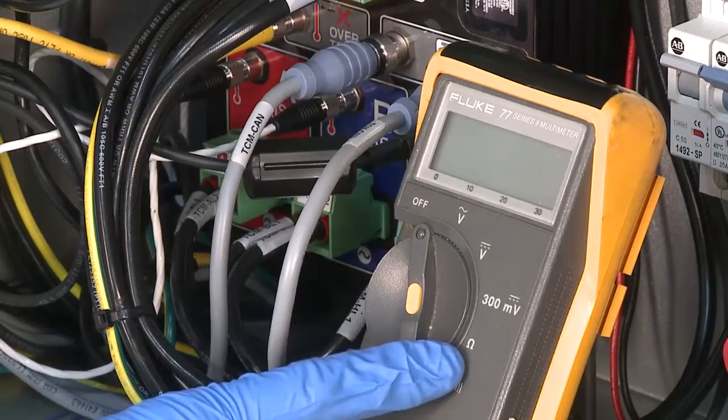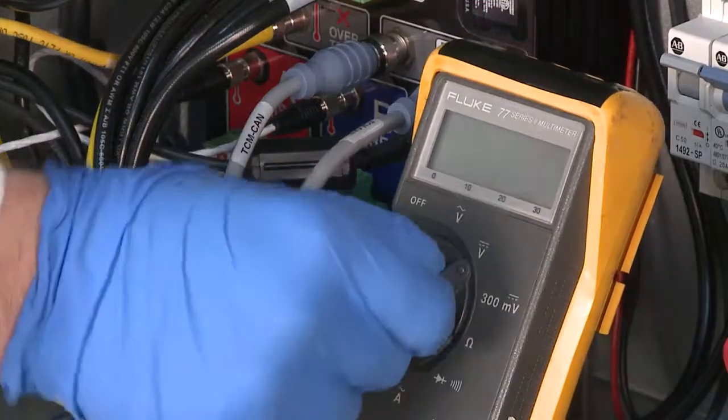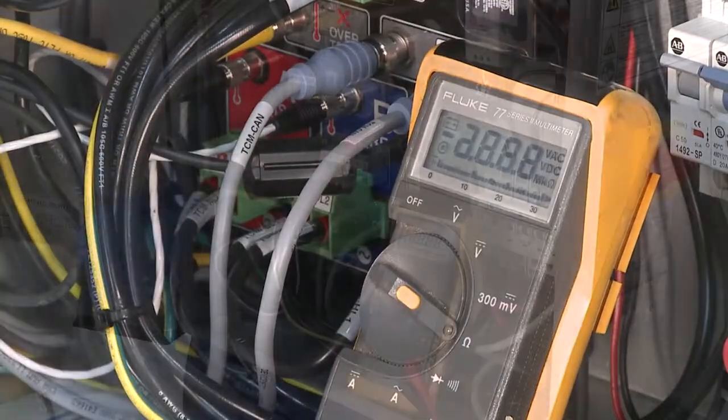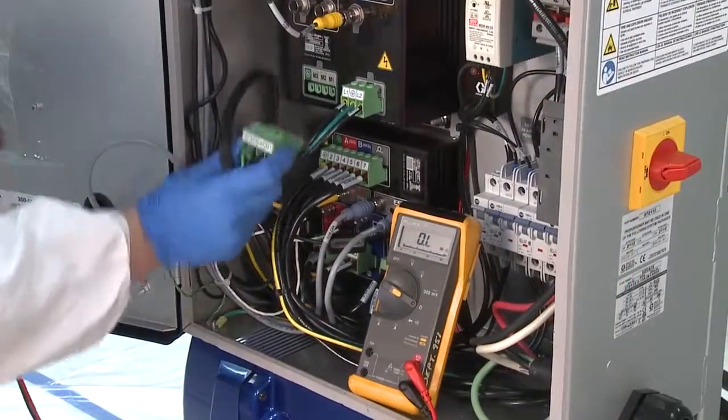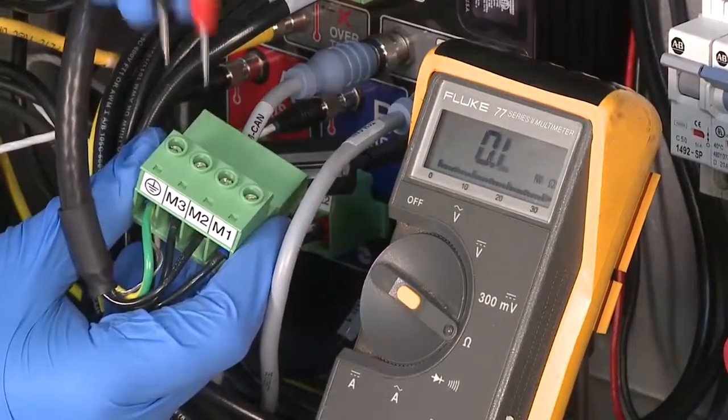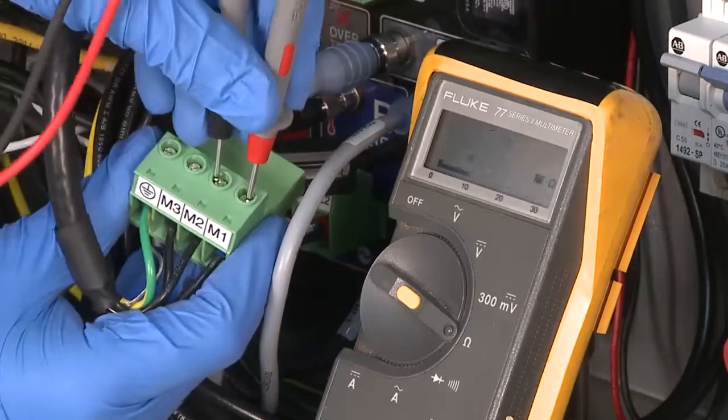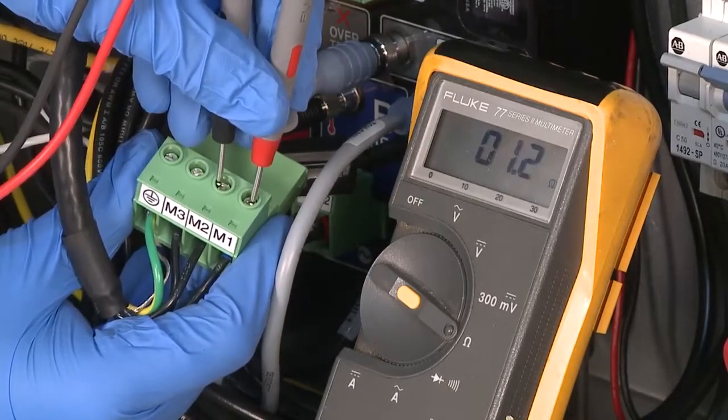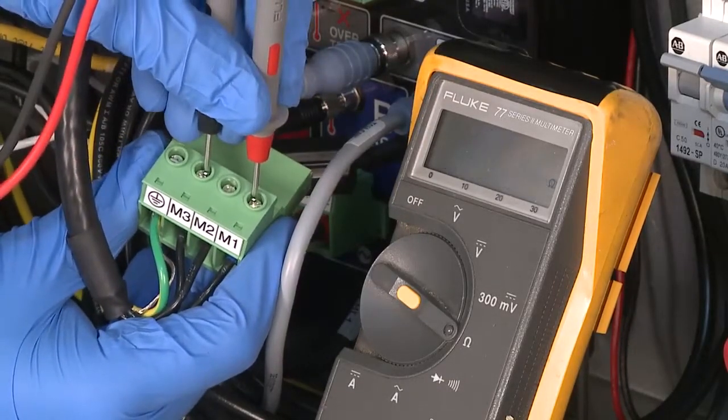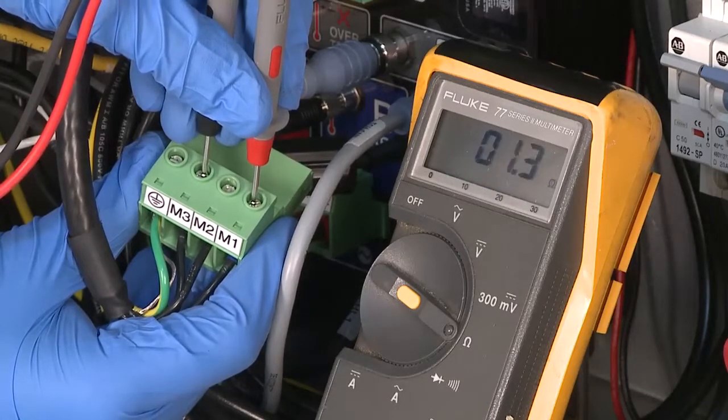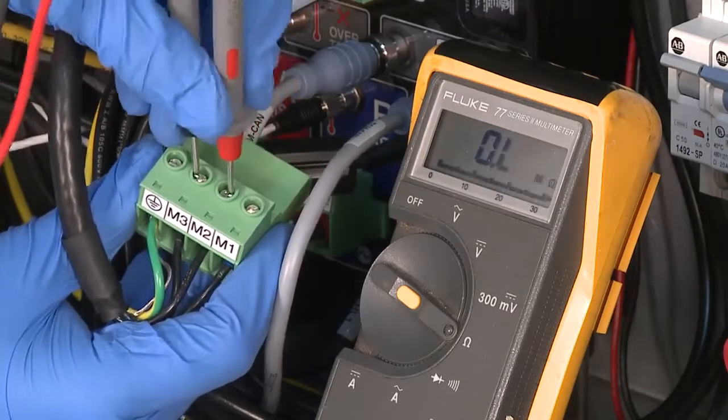Measure resistance at the motor power connector. Disconnect motor cable from MCM port 15. Readings must be less than 8 ohms resistance between each pair of motor power leads: M1 to M2, M1 to M3, and M2 to M3.